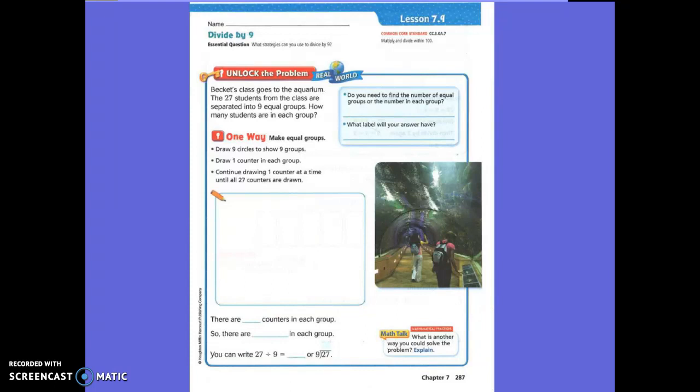Let's read the first story problem. The class goes to the aquarium. The 27 students from the class are separated into 9 equal groups. How many students are in each group? Looking at the first blue box, do you need to find the number of equal groups or the number in each group? What do you think, Tiger? The number in each group. Do you guys agree? Yes. Okay, the number in each group. Let's write that down.